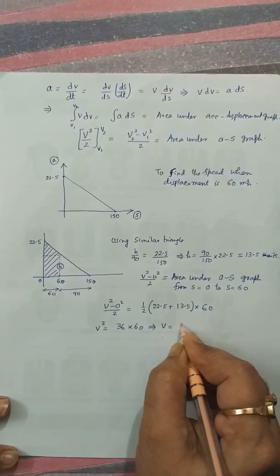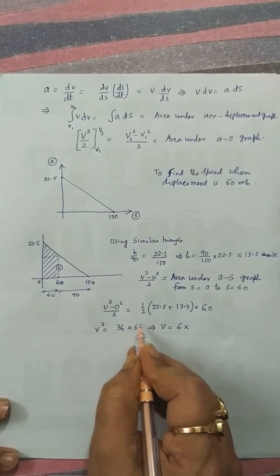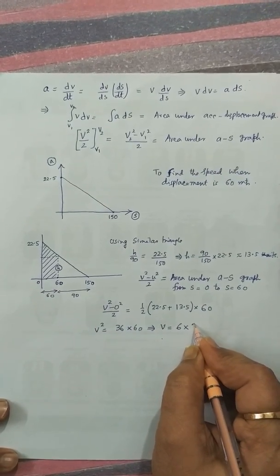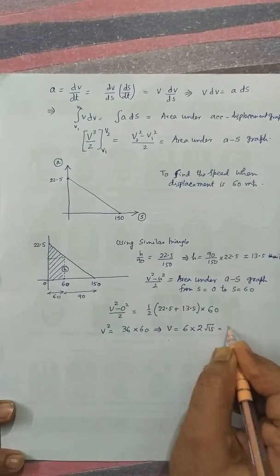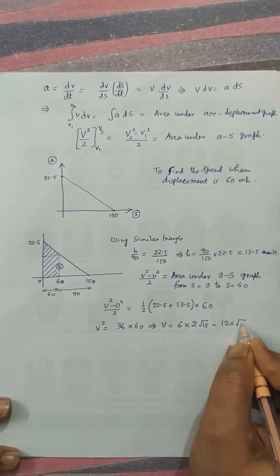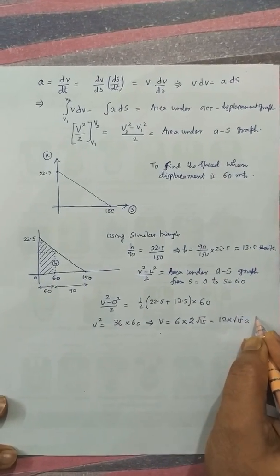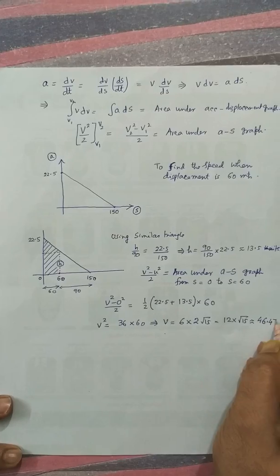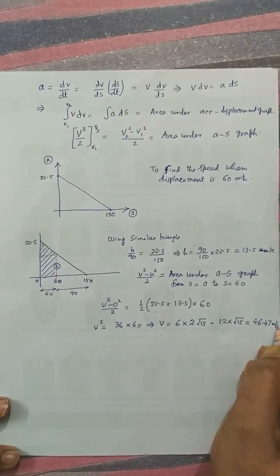V is equal to 6 and this is 4 into 15, that is 2 root 15, that is 12 into root 15, nearly 46.47 meter per second.